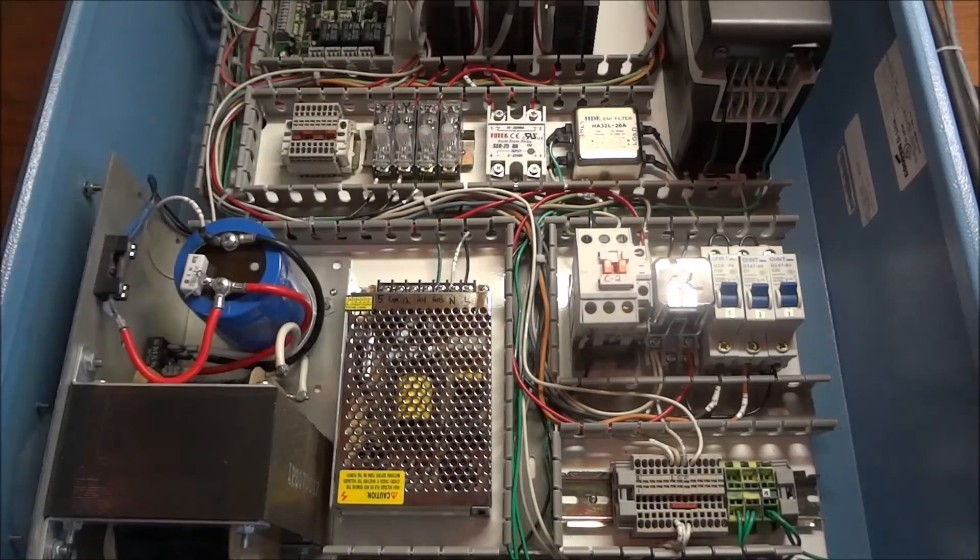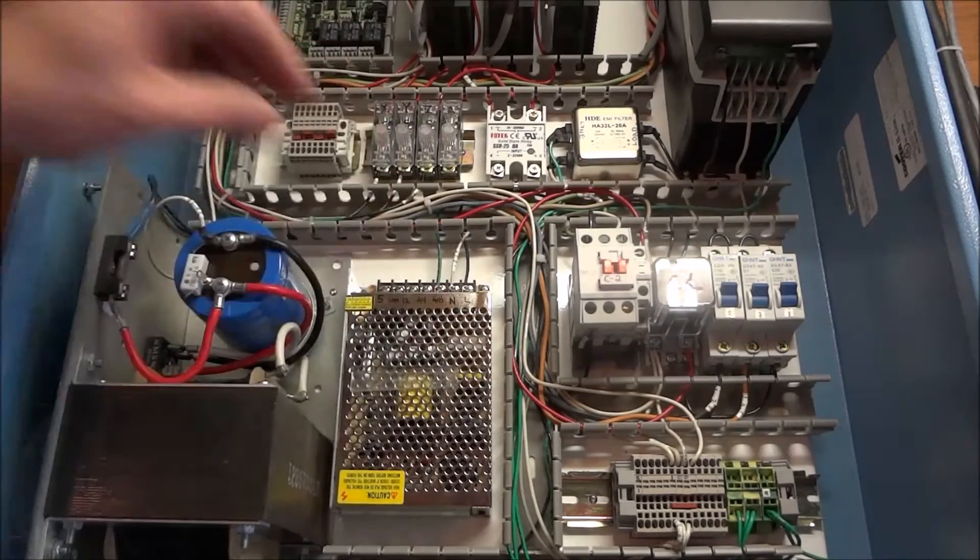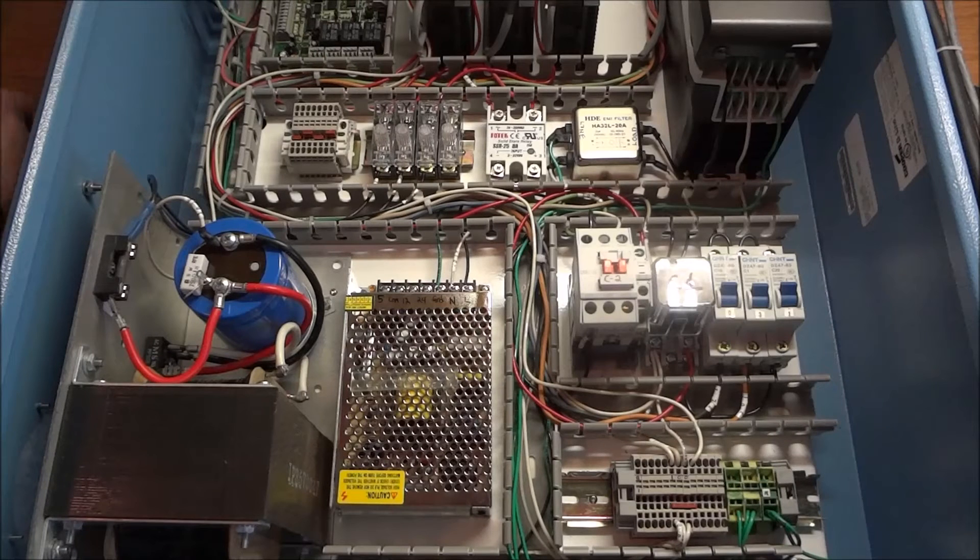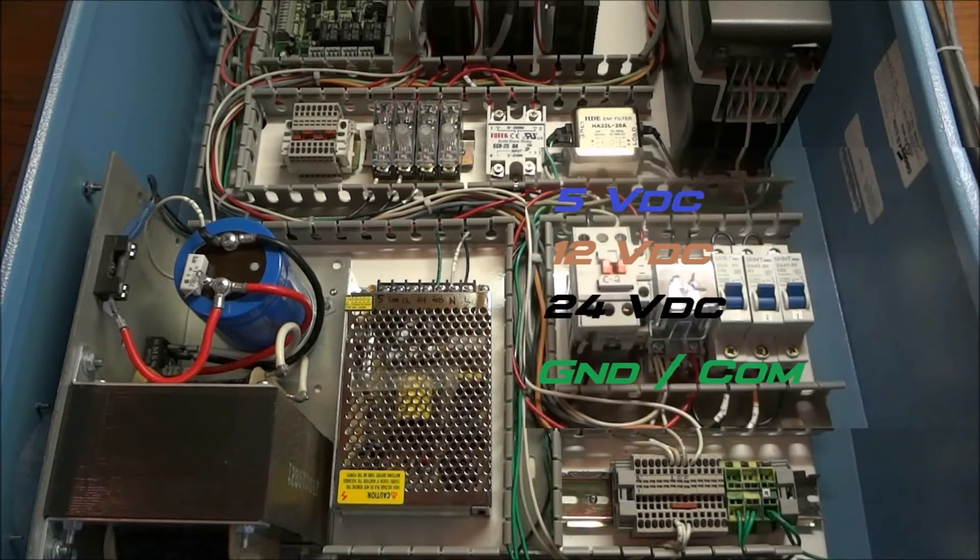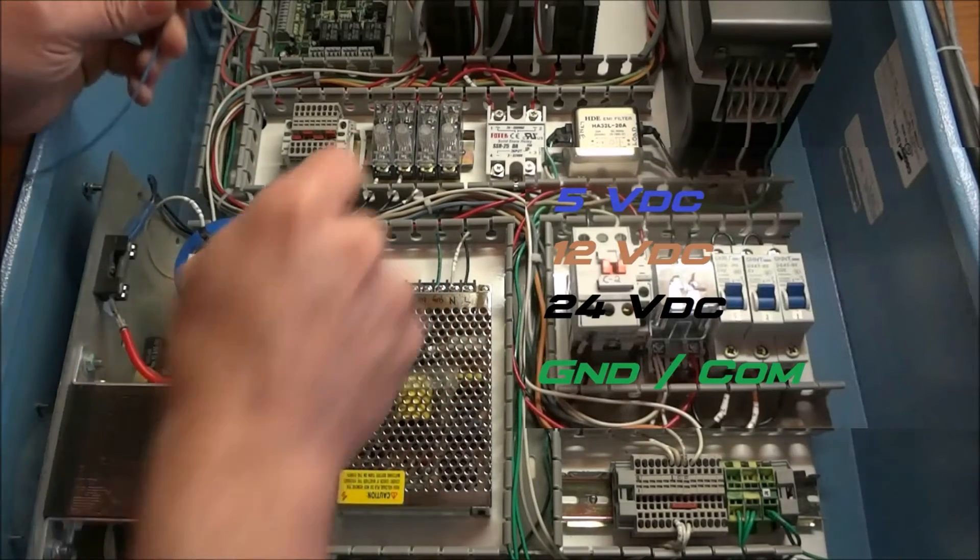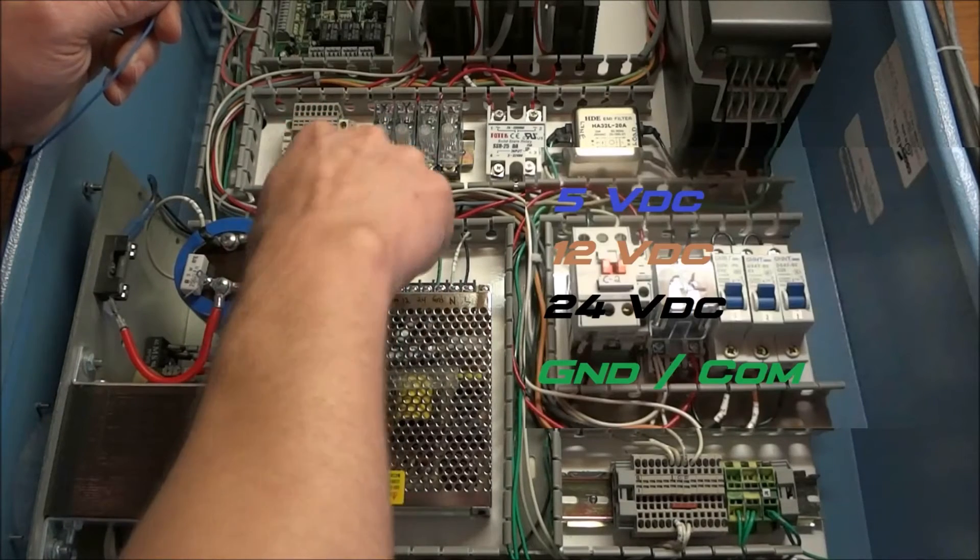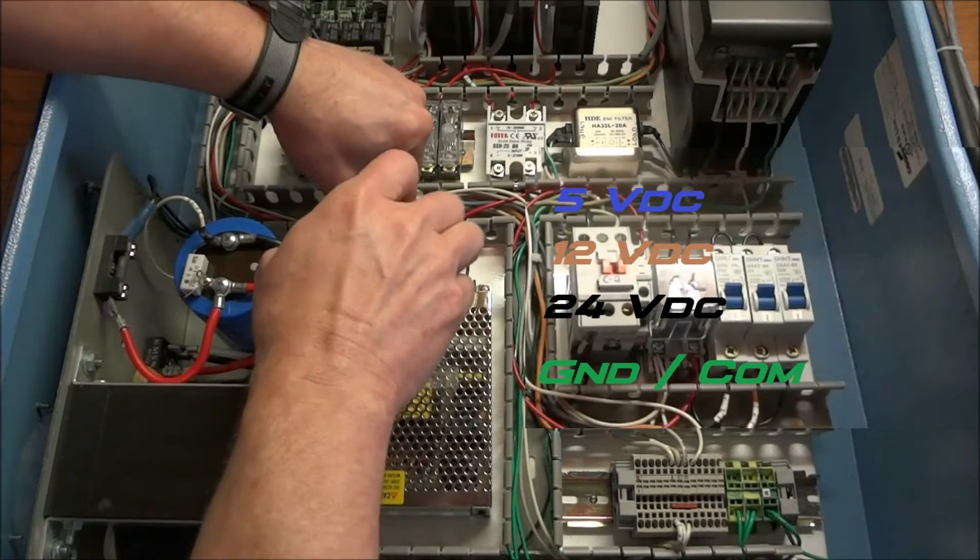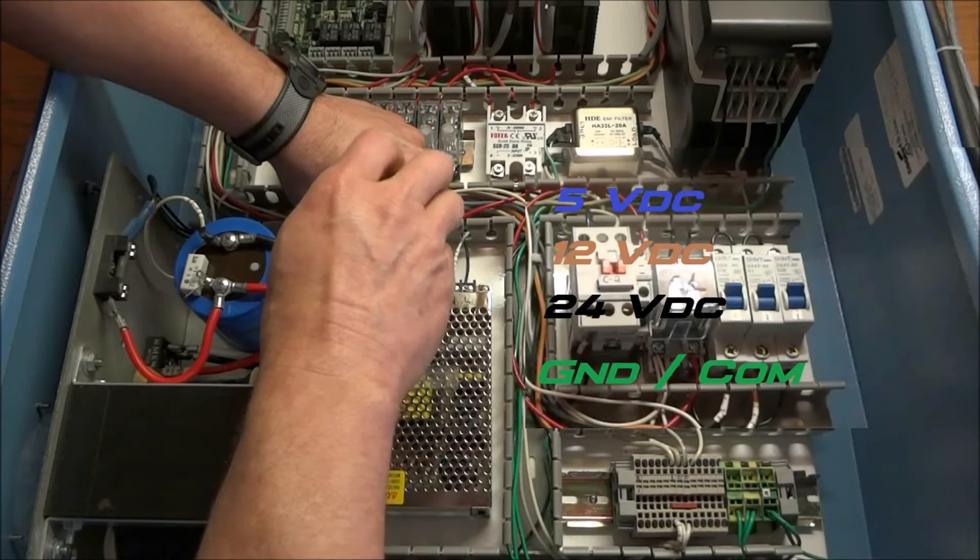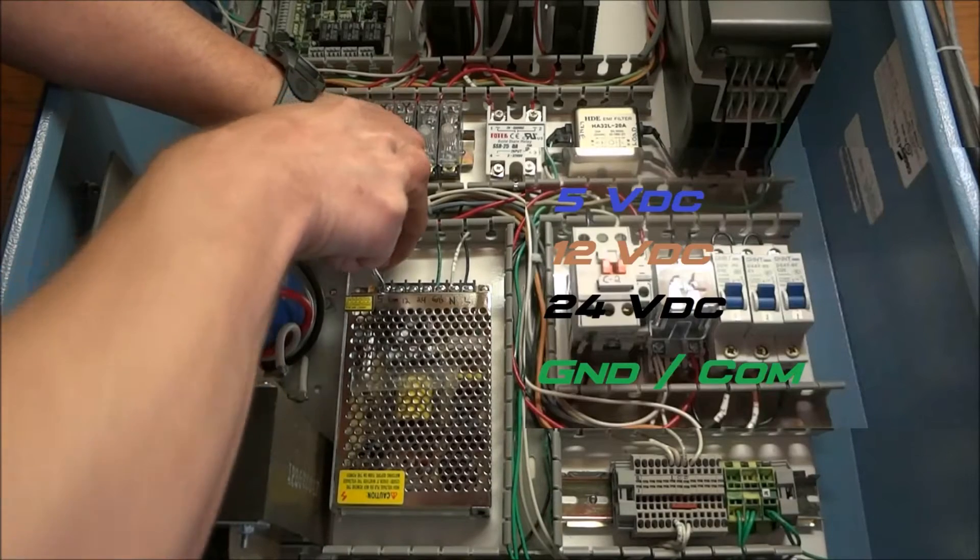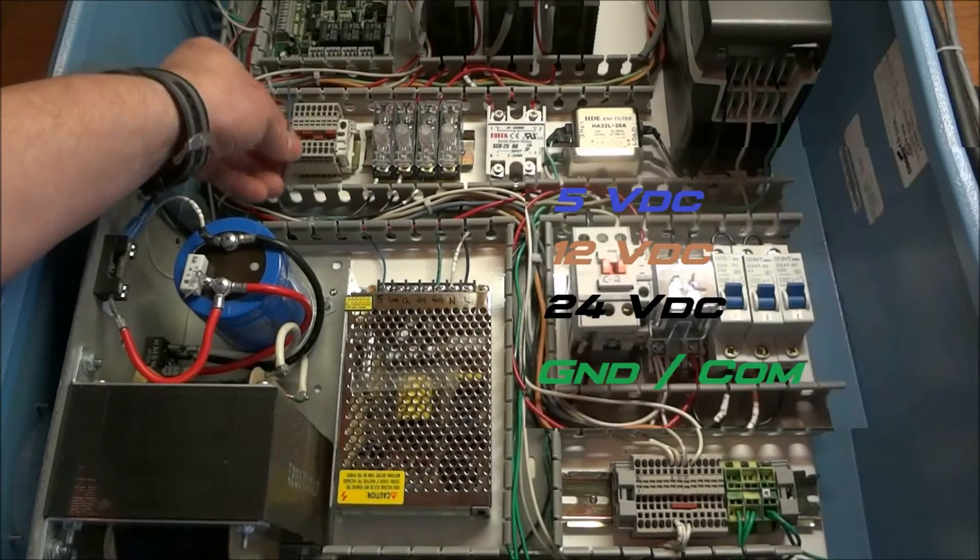So what I'm going to do first is just remove this little cover. And I'm going to run my 5 volts from the power supply to the terminal strip. I am using a blue wire for my 5 volts. It's kind of a standard that I've used over the years for 5 volts on different projects that I've used. Blue is normally the color for 5 volts.